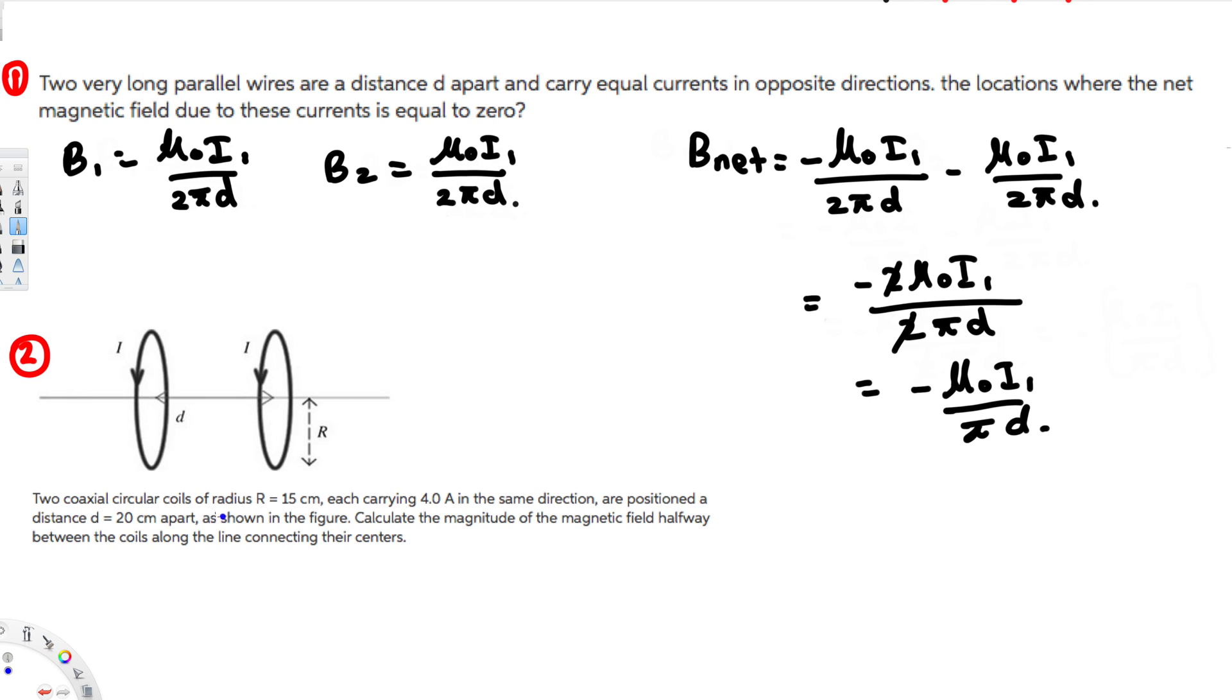Now let's go ahead and do the second question. The second question is asking: two coaxial circular coils of radius r equals 15 centimeters, each carrying 4 amperes in the same direction, positioned a distance d equals 20 centimeters apart as shown in the figure. Calculate the magnitude of the magnetic field halfway between the coils along the line connecting the centers.